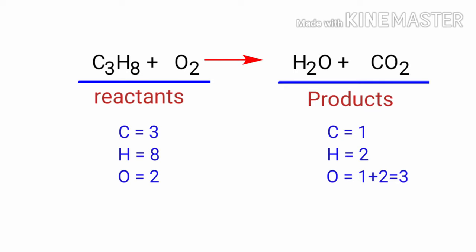The number of atoms are not balanced on both sides. To balance the chemical equation, we need to make use of coefficients. A coefficient is a number that we place in front of a chemical formula.